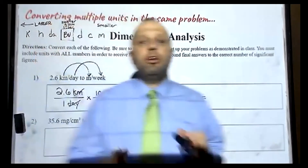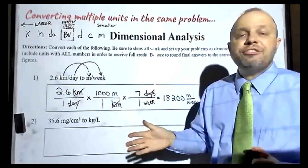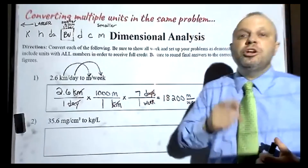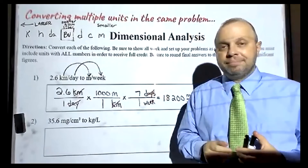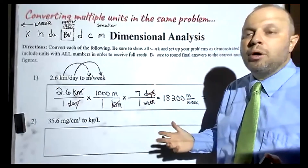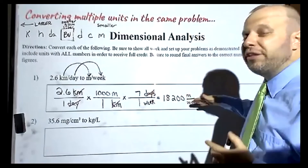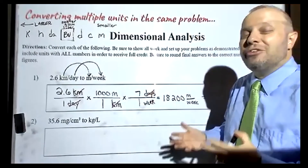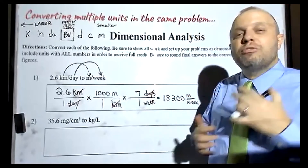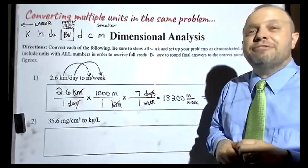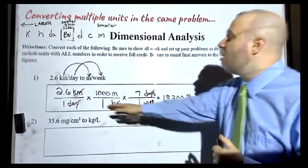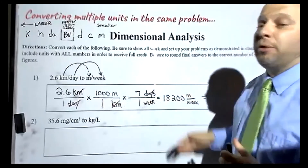I'm going to encourage you to show the full answer from the calculator, and then the rounded answer. The reason is the final answer will only be worth one point. So if you were to do all of this correctly but left your answer unrounded, you would only lose one point. But if you don't show the steps that lead up to your final answer, even if your final answer is correct, I can't really award you any points because I'm not sure what steps you took to get there. So just be mindful — on a test or a quiz, you're going to want to show as much work as possible.